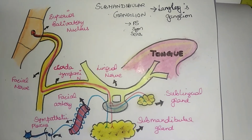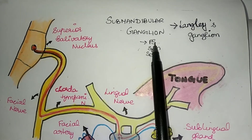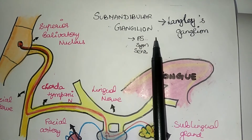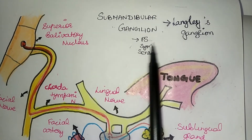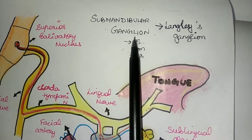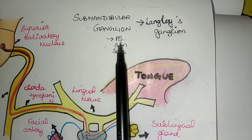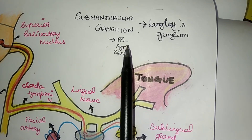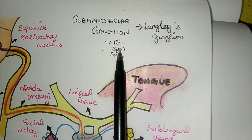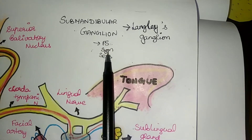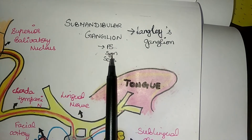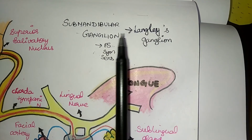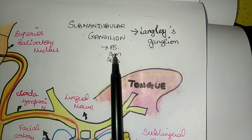So we have covered the course, relations, and roots of the submandibular ganglion. Regarding function: parasympathetic stimulation produces watery secretions from the glands. Sympathetic stimulation produces sticky, mucus-rich secretions and also causes vasomotor action.